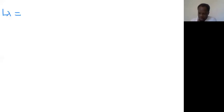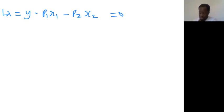The next step is to differentiate with respect to lambda. When you differentiate with respect to lambda, you just get y minus p1 x1 minus p2 x2 equals zero. I will call this equation 3.